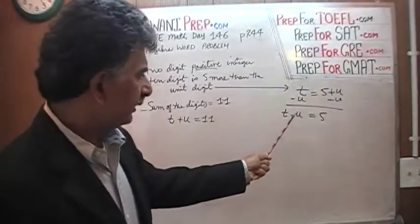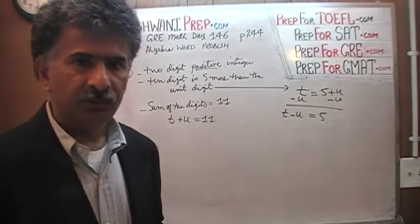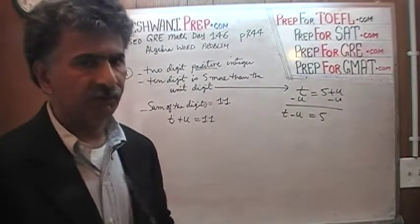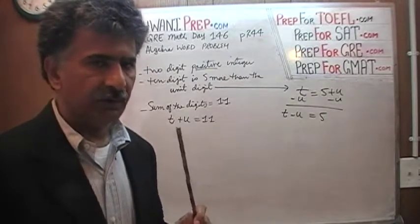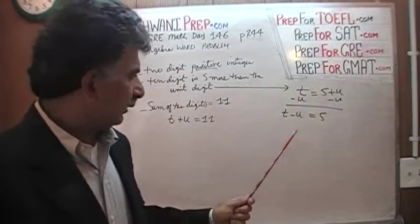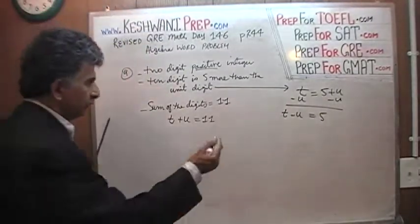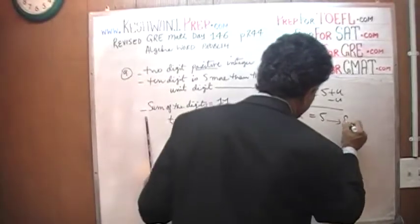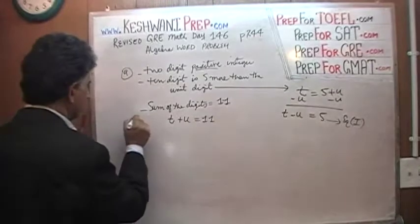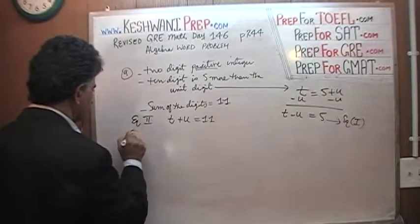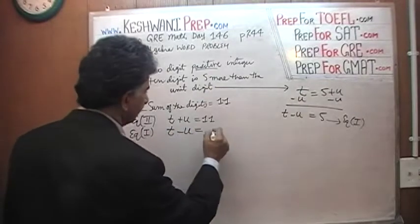The difference between the tens digit and the units digit is 5 — that's not sufficient on its own. Simply telling me the difference between the two digits is 5 is not enough; I need to know which one is bigger. So the difference between T and U is 5. Let's put equation 2 — T plus U equals 11 — and equation 1 underneath it: T minus U equals 5.